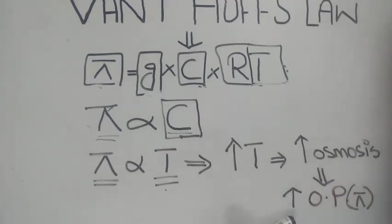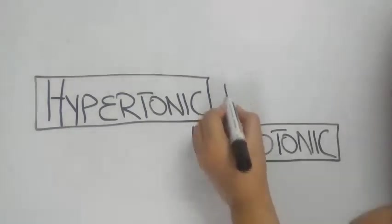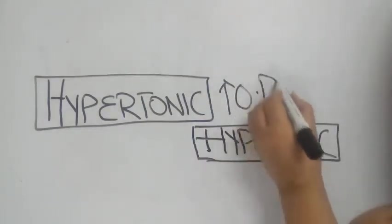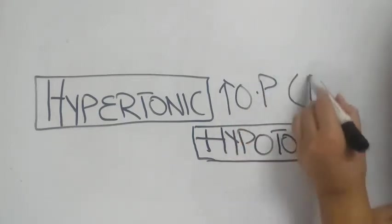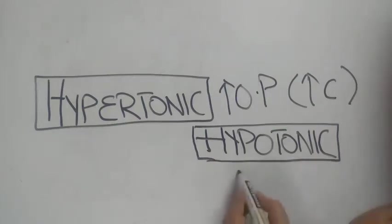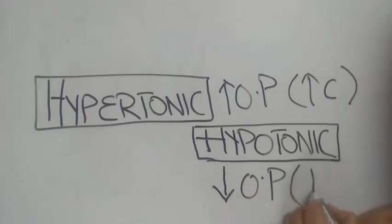Hypertonic solutions are those that have high osmotic pressure because they have high solute concentration, whereas hypotonic solutions have low osmotic pressure because they have low solute concentration.